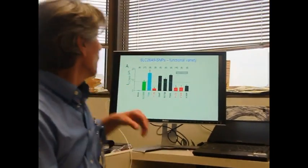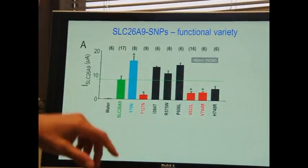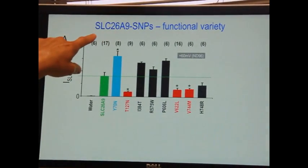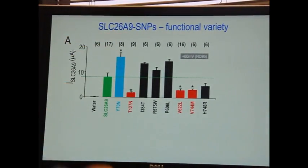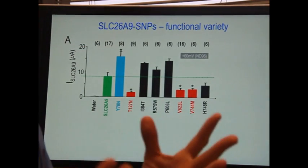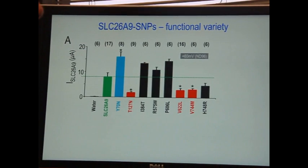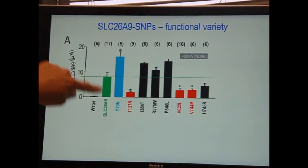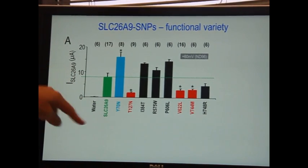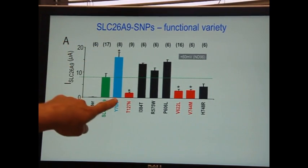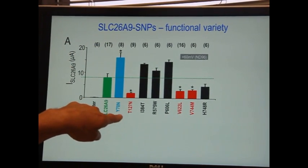What Anping has found is, when he looks at the naturally occurring human mutations of SLC26A9, which in my lab, being a physiology lab, we know is both a channel and a chloride bicarbonate exchanger, the wild-type transporter, shown in green, has a certain amount of function. This is current on the y-axis. But one mutation has a lot more function than the wild-type, Y70N.